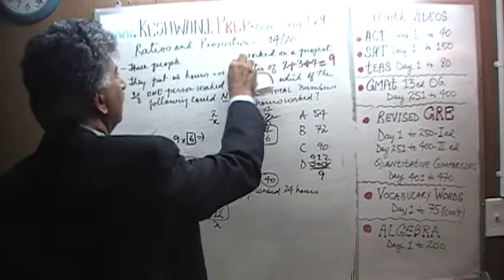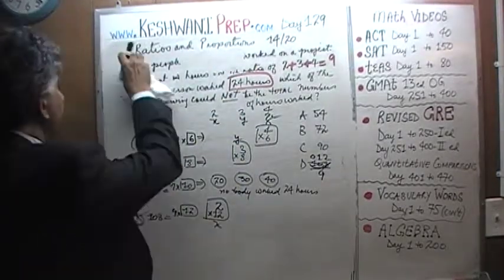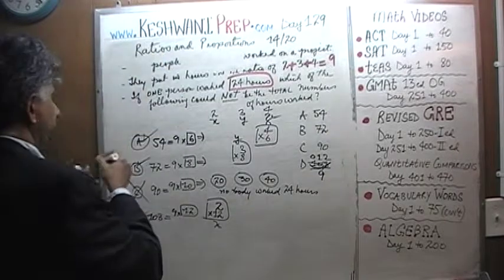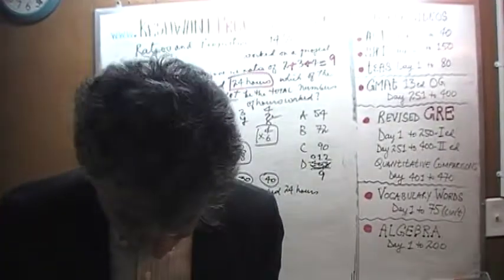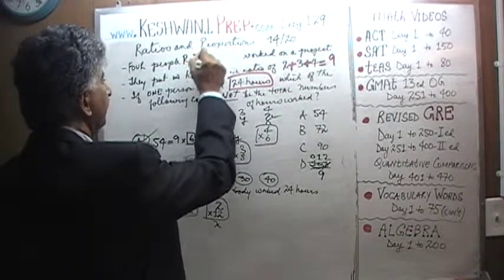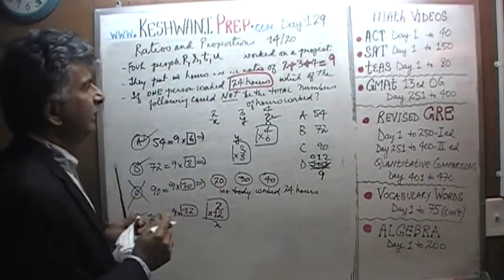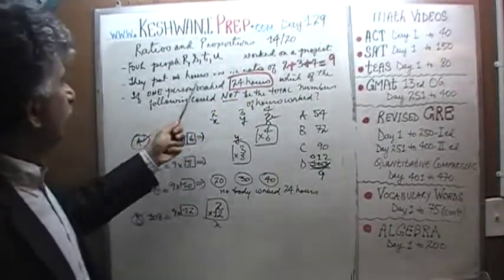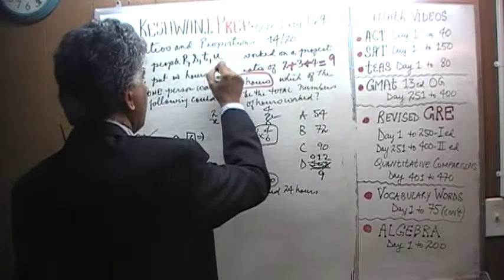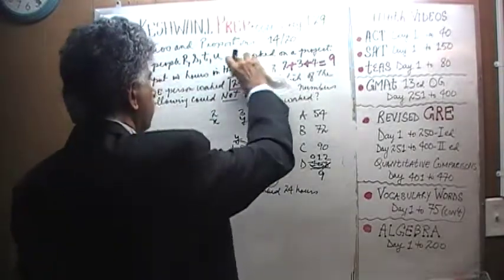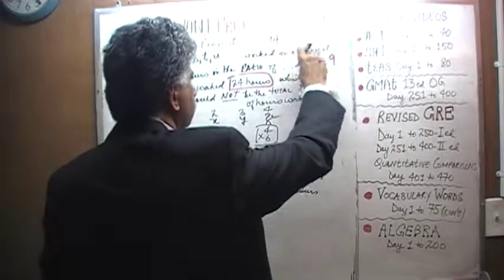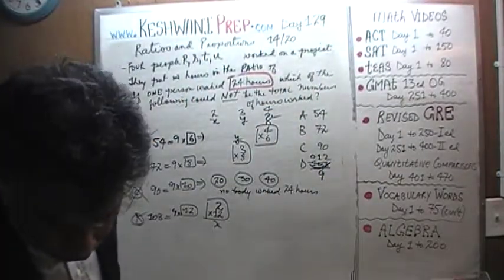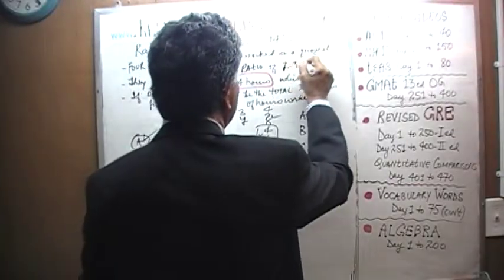So now we have 4 people, let's give them a name, let's christen them. This is the problem for tomorrow, you understand? So we have 4 people, not 3. 4 people, let's call them R, S, T and U. 4 people, R, S, T and U work on a project. They put in the hours in the ratio of 2 to 3 to 4 to 5. I tell you, sometimes the creativity just shocks me.